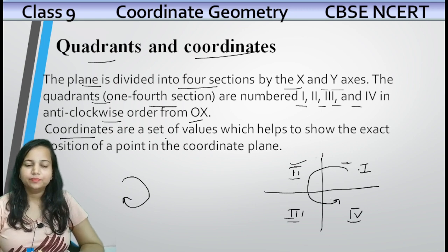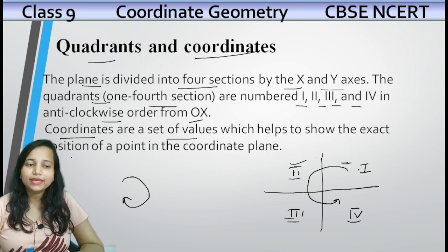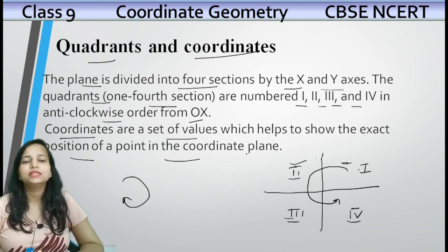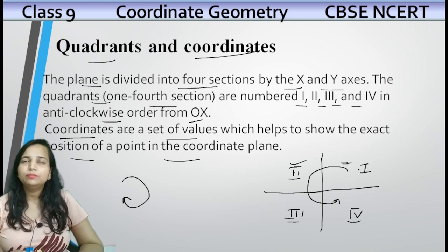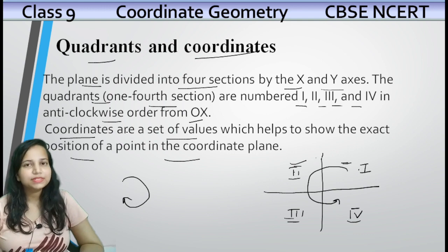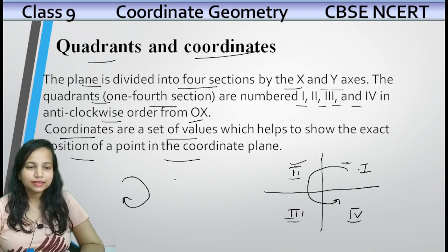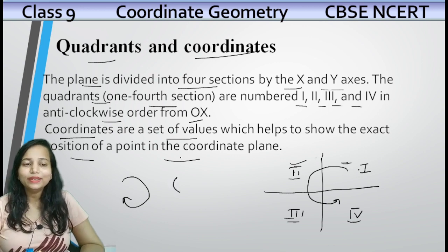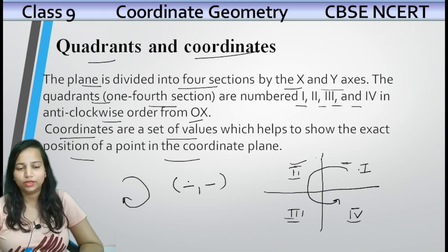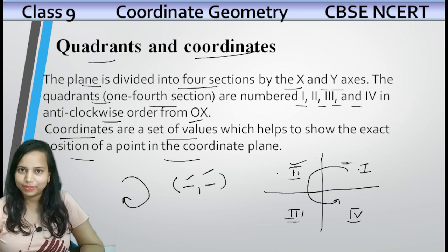Coordinates kya hain? These are a set of values which helps to show the exact position of a point in the coordinate plane. Coordinates mein kuch values hongi x ke liye, aur kuch values hongi y ke liye. Aur in values ki help se hum ek object ki position pata karte hain.